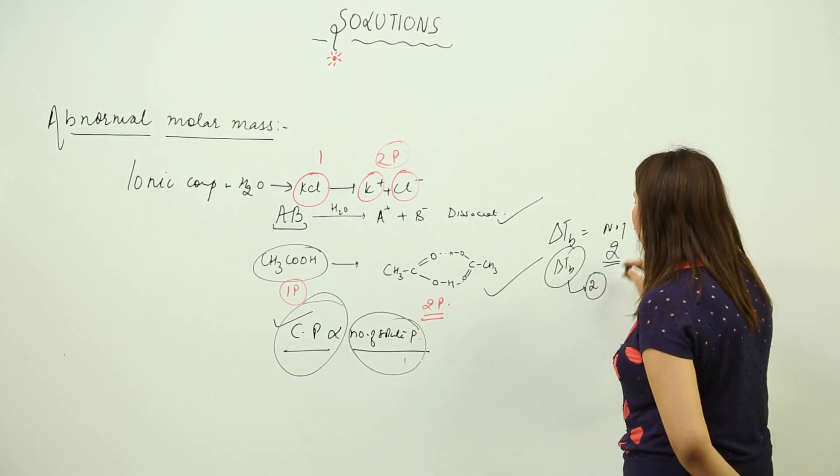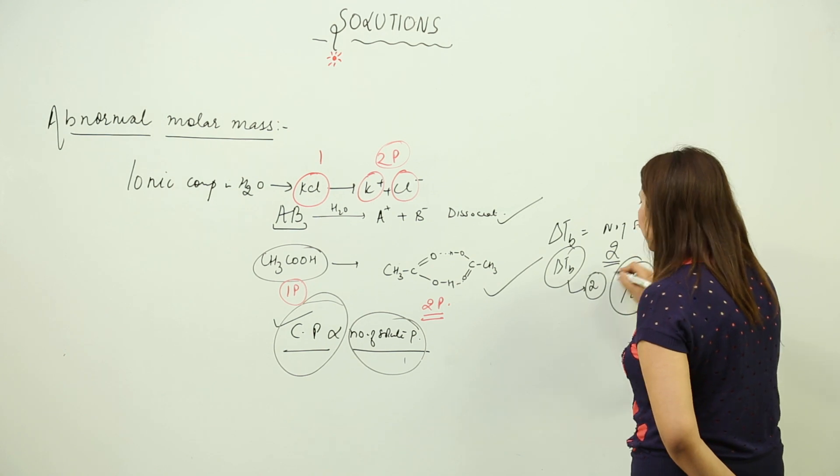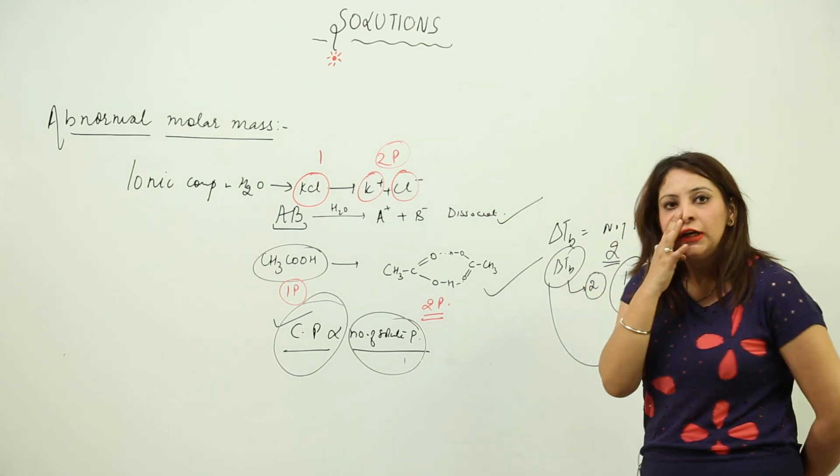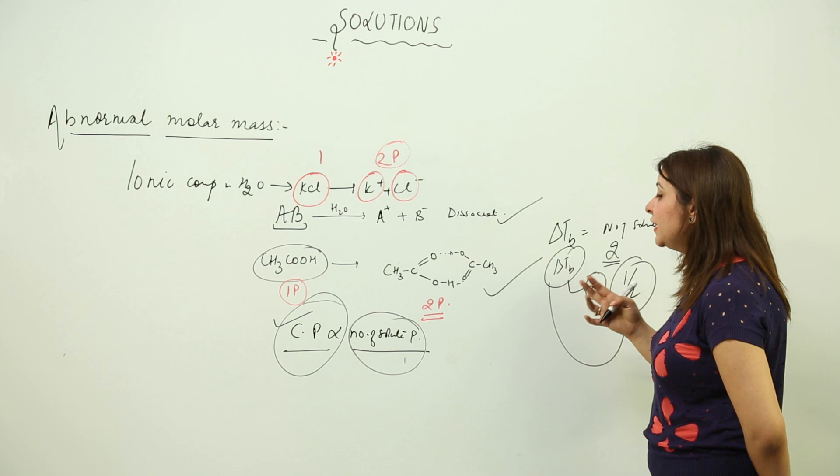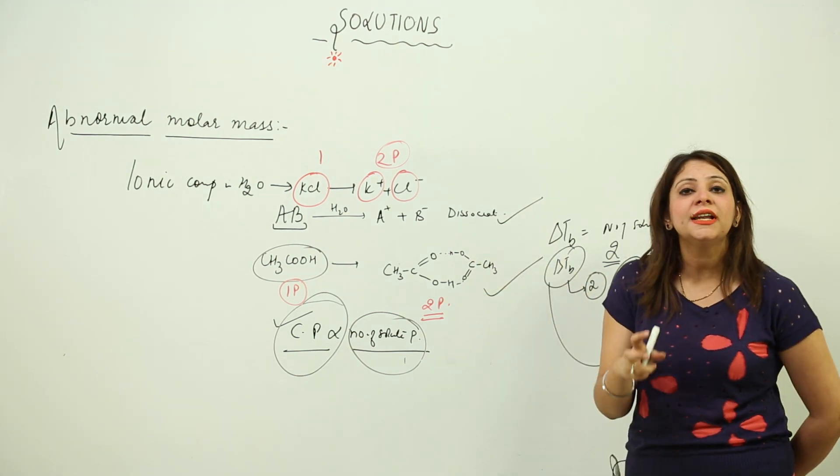And likewise here, if it is getting reduced to half, that means like two particles combined to form one particle, so that means they are getting half. So that means we can say that either the dissociation or association can have an effect.